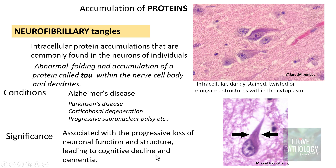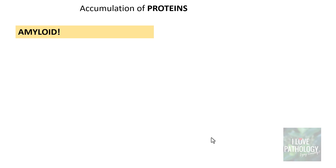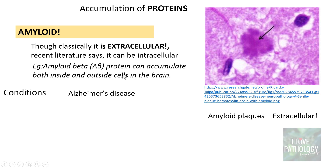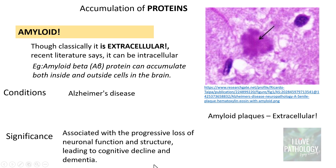The last protein accumulation to remember is amyloid. Classically, amyloid is defined as an extracellular accumulation, but recent literature indicates it can also be intracellular. For example, amyloid beta protein can accumulate both inside and outside cells, particularly in Alzheimer's disease. The amyloid plaque shown here is a classical extracellular accumulation of amyloid beta protein. Its significance is that it is associated with progressive loss of neuronal function and structure, leading to cognitive decline and dementia. A detailed video on amyloidosis is available on the channel.